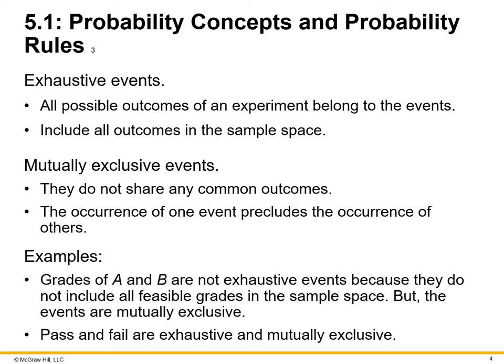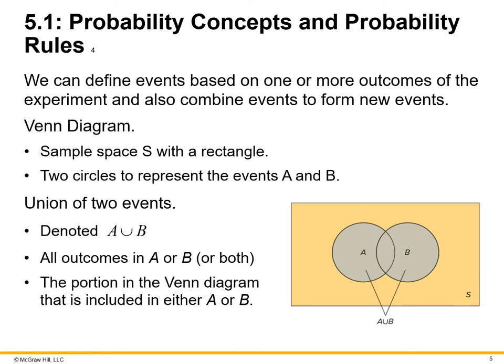If we group up a set of variables, in this case, a grade of A, B, C, and D, all equal pass, while the grade of F is one variable that equals fail. We can define events based on one or more outcomes of the experiment. Also combine events to form new events, like an event diagram. The bottom right corner is an example of a Venn diagram, with all groups on the outside of A and everything in B, but everything that has commonality in between is the center.